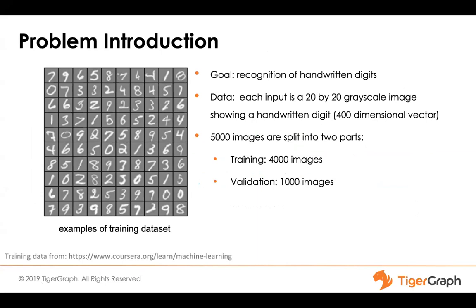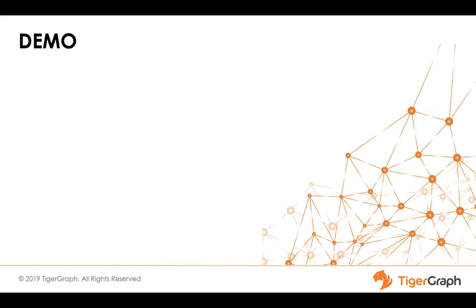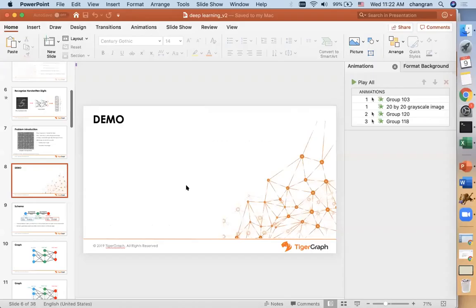I got our training data from a free online course provided by Coursera. Altogether I have 5,000 images. I split these into two parts: 4,000 images to train the neural network, and 1,000 images to validate the model and test how well it works. Now that we know the problem, I'll first show you the solution implemented by TigerGraph, and then after that I'll come back for the detail of implementation. Let me switch to the Graph Studio.